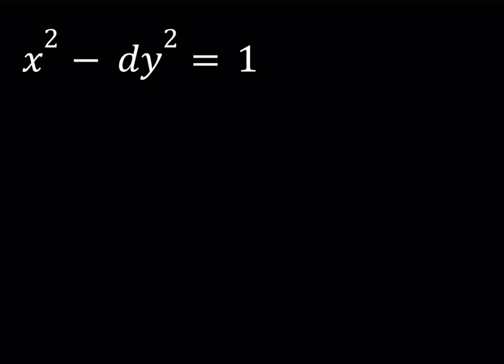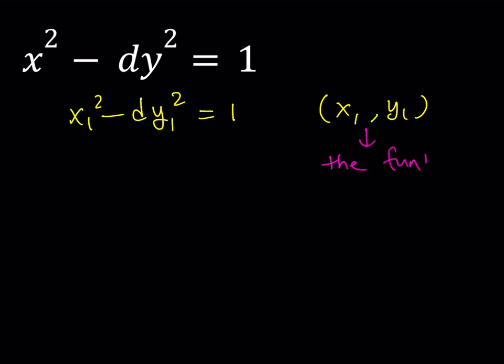So, this is Pell's equation: x squared minus dy squared is equal to 1. Here, d is an integer that is not a perfect square — you can also call that a square-free integer. If d is equal to 4, then we don't get a Pell's equation because that is going to be factorable. Now, I'd like to define the fundamental solution to this equation. If x1, y1 is a solution such that x1 is the smallest positive integer satisfying x1 squared minus d times y1 squared equals 1, then x1, y1 is called the fundamental solution.